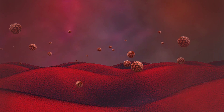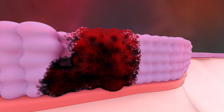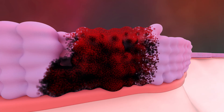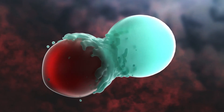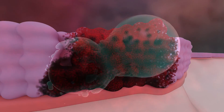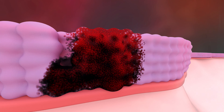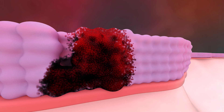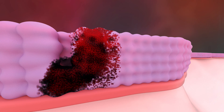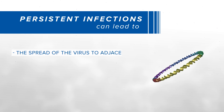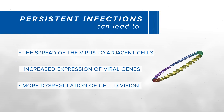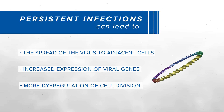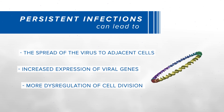Further progression of the HPV infection results in changes in the epithelium that are detectable by pap testing. Even HPV infections that produce abnormal cervical cells are often cleared by the immune system, but some HPV infections are persistent. These persistent infections can lead to the spread of the virus to adjacent cells, increased expression of viral genes, and more dysregulation of cell division.